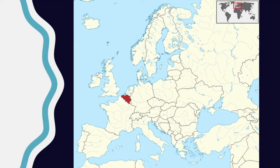She lived from 1528 to 1587 in Antwerp, Belgium. So here is this map of Europe. Belgium is here in red. It's close to France, Germany. The UK is here.